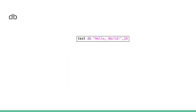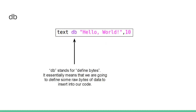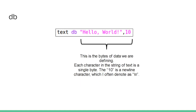As you can see it says text DB Hello World comma 10. So what is DB? DB stands for Define Bytes. It essentially means that we are going to define some raw bytes of data to insert into our code. This is the data that we are defining. Each character in the string of text is a single byte — the capital H is a byte, the E is a byte, the L is a byte.